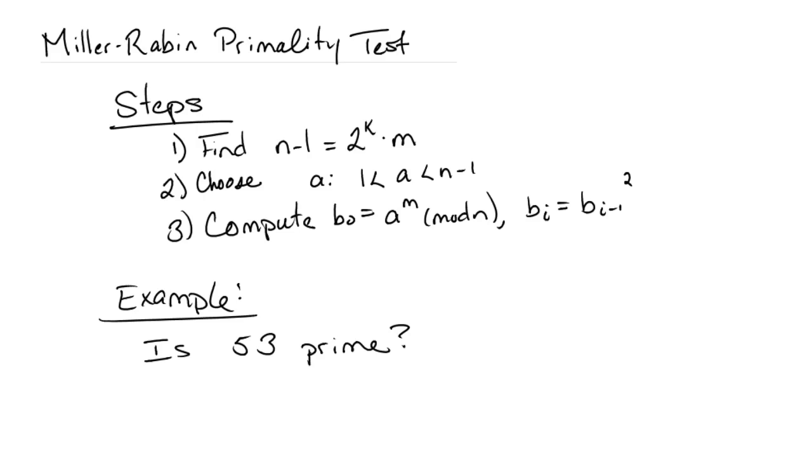However, that's a bit of a misnomer, since it doesn't really test if something is prime. It tests if it's not prime, if it's composite. So what I mean by that is, if we run the test and it says yes, this number is prime, what it really means is yes, this number is probably prime. We're almost sure, but we're not completely sure.